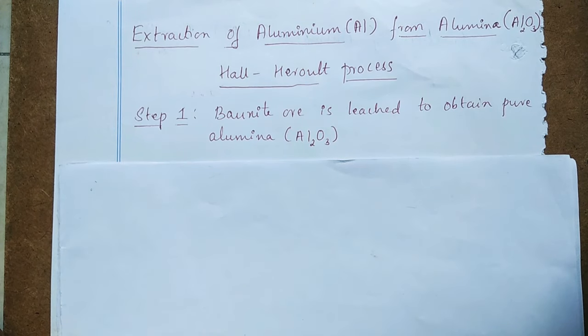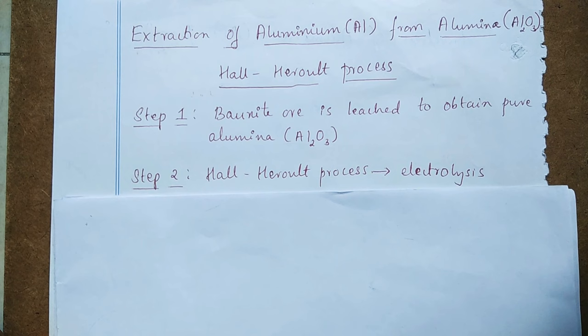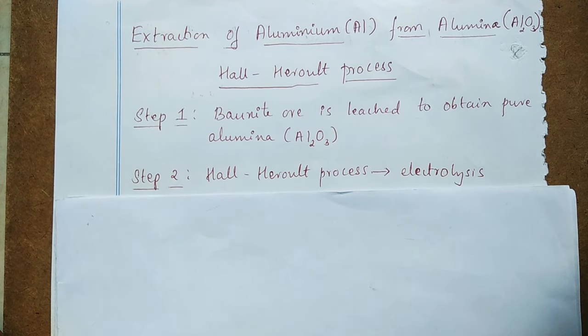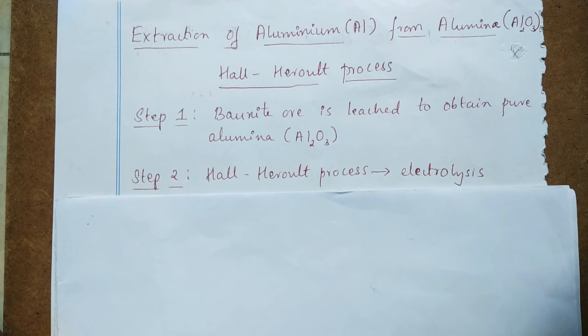After removing the major impurities from bauxite ore, you can carry out the Hall-Héroult process. The Hall-Héroult process is done with the help of electrolysis.